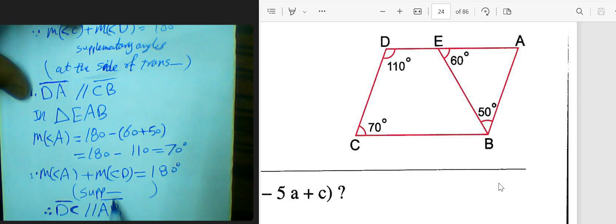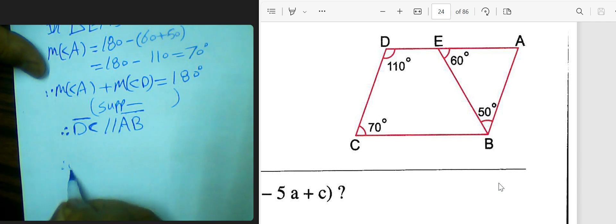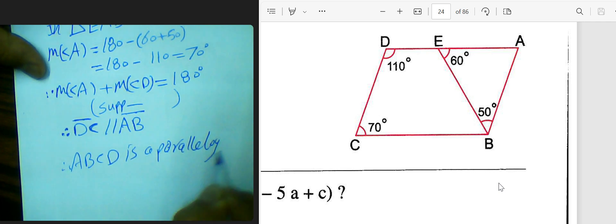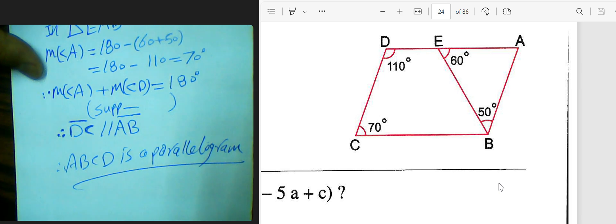We have DE parallel to CB. Now we can conclude ABCD is a parallelogram. It's a parallelogram.